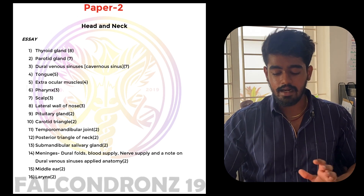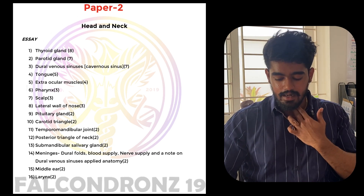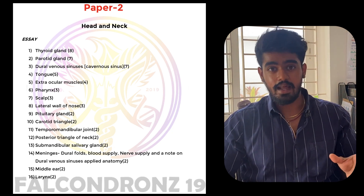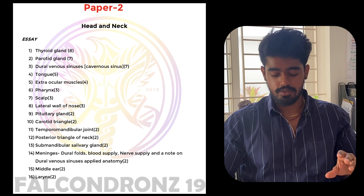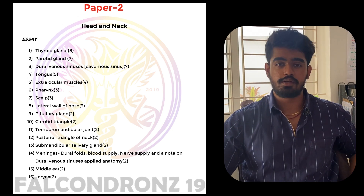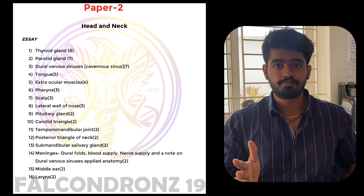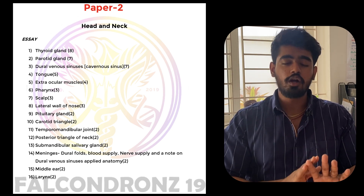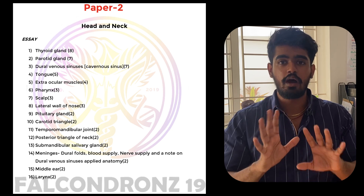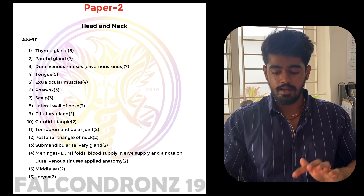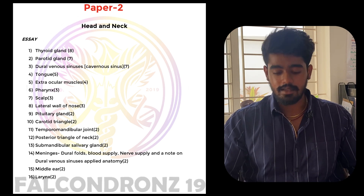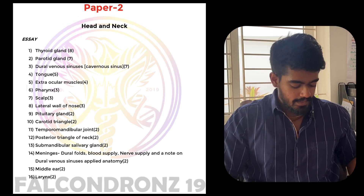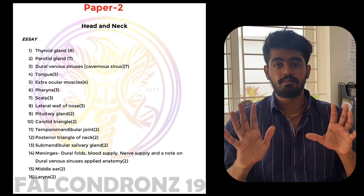In paper 2, for head and neck, the important questions are: thyroid gland — very important — dural venous sinuses, extraocular muscles, tongue, pharynx, scalp, lateral wall of nose, parotid gland, and carotid triangle. Kindly make sure you draw a diagram for everything — at least four diagrams for essays, and a minimum of two diagrams for short notes. Make this a habit. Short notes include: ciliary ganglion, facial artery, maxillary artery, nasal septum, maxillary sinus, and dura mater.